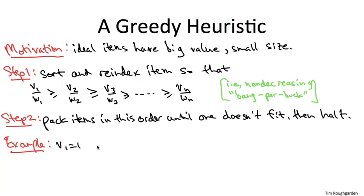So just a real quick example. Let's consider the following three item instance. I've taken the liberty of sorting the items by ratio. The first item has value two and size one for a ratio of two. The second item has a ratio of four-thirds, value four size three. And the third item has a ratio of one, value and weight equal to three. Let's say the knapsack capacity is five.